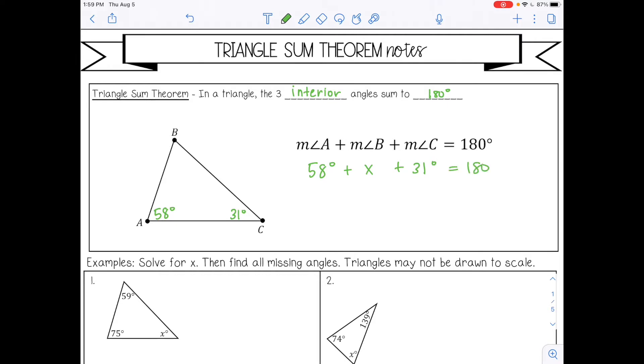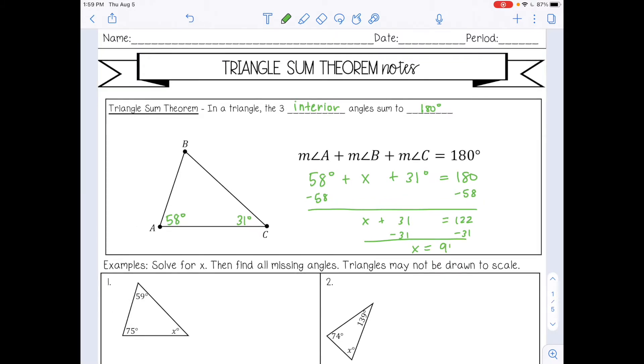We're basically subtracting the angles that we know from 180. So I'm going to subtract 58 on both sides, then I'll subtract 31 on both sides. I just made these angles up, so it's probably not going to be drawn to scale. So X would be 91 degrees. That means angle B would be 91 degrees.